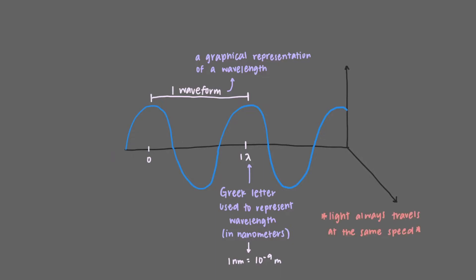Remember that light always travels at the same speed, the speed of light denoted by c, and that c is equal to 2.998 times 10 to the 8 meters per second.